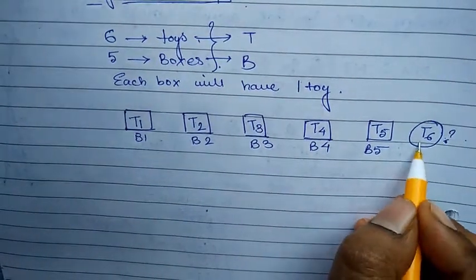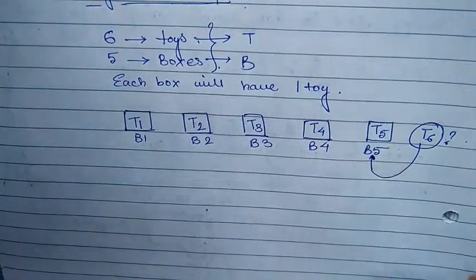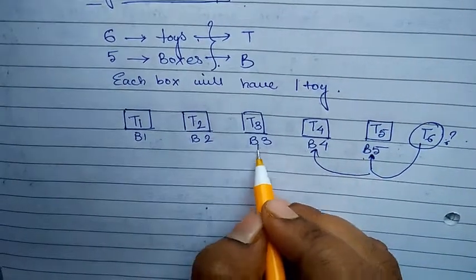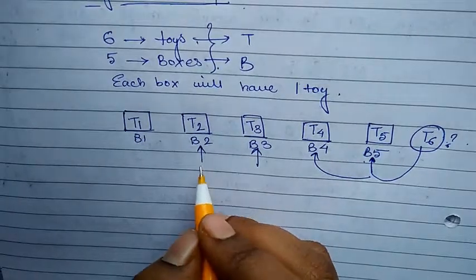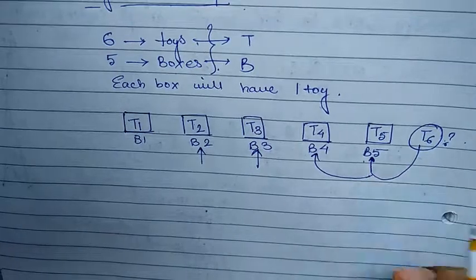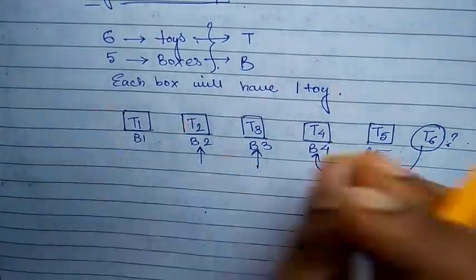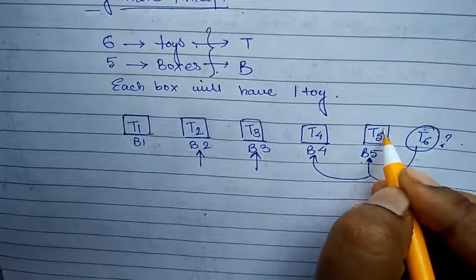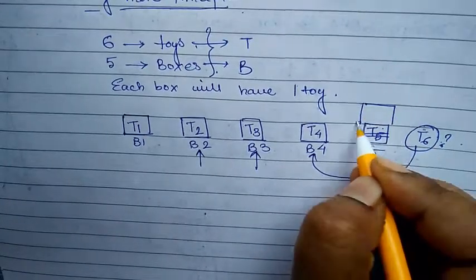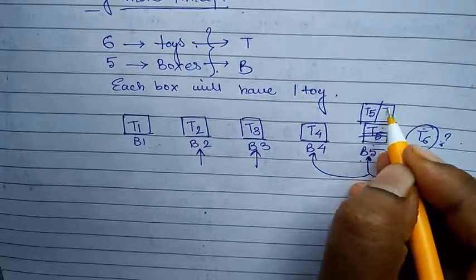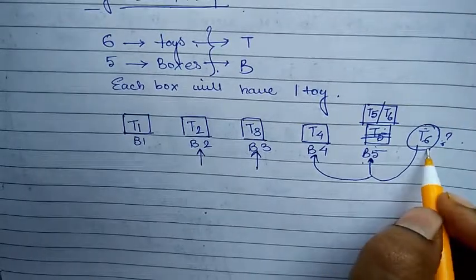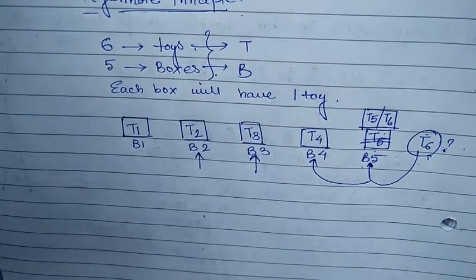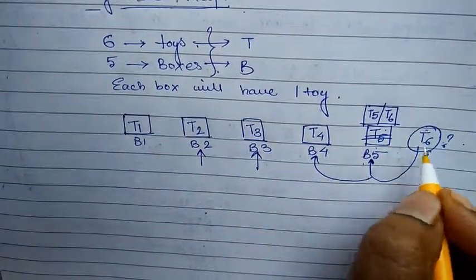What will I do with T6, that is toy number six? Now this has to be adjusted in either of the five boxes that are present. So it can be accommodated with toy five in box five, or with toy four in box four, or with toy three in box three, or with toy two in box two. I have to adjust that left-out toy in either of the five boxes. Let me take toy six and adjust it with toy five, so box B5 will have toy five and toy six in it. This adjustment of one left-out toy in the box is known as the pigeonhole principle.